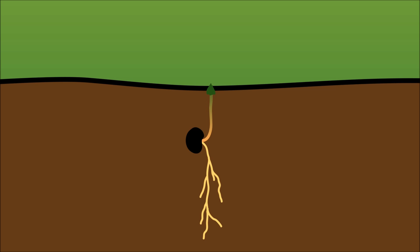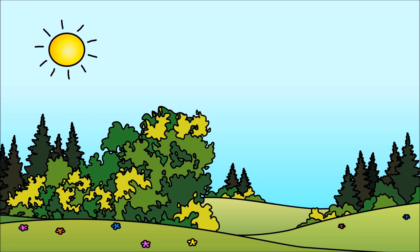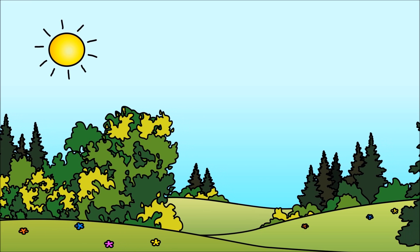Once the shoot has sprouted, it no longer needs the food from inside the seed. Plants produce their own food using sunlight.